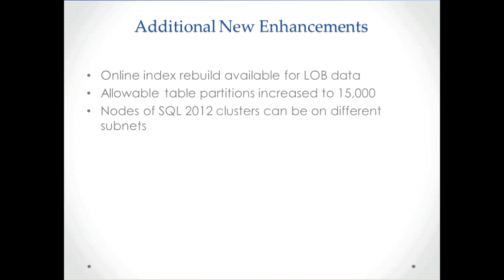There are a few more enhancements to quickly point out. In previous versions, if you needed to rebuild indexes on a table that contained LOB data, it needed to be done offline — now these indexes can be rebuilt online in 2012. Another enhancement is that the number of partitions you can create on a table increased from 1,000 to 15,000. And the requirement that all nodes in a cluster must be on the same subnet is no longer enforced in 2012 — they can now be on separate subnets.